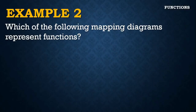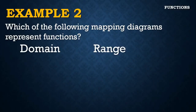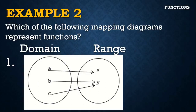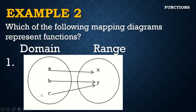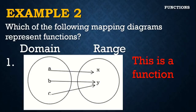Looking at mapping diagrams to represent functions: in the first example, domain A is related to X — that's one-to-one. Domain B and domain C are both related to Y — that is many x-values equivalent to one y-value, or many-to-one. Therefore, this is an example of a function.